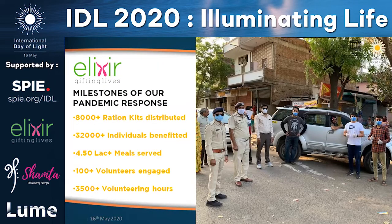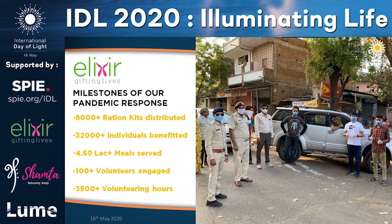Specifically for Ahmedabad, we have been able to supply 8,000 plus ration kits — sustainable for a family of four for at least a week — reaching 32,000 plus individuals. 2.5 lakh plus meals have been served, 100 plus volunteers have been engaged, and 3,500 plus volunteering hours have been contributed. This is a small ray of light that Elixir is trying to pass on in the community.